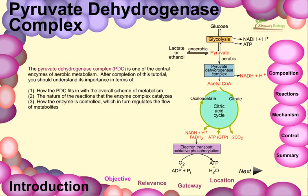Welcome friends. In this video tutorial we will be talking about the pyruvate dehydrogenase complex and its role in producing acetyl-CoA from pyruvate. The pyruvate dehydrogenase complex, or PDC, is one of the central enzymes of aerobic metabolism. After completion of the tutorial, you should understand the importance of how the PDC fits into the overall scheme of metabolism, the nature of the reactions and enzyme complexes that catalyze them, and how the enzyme is controlled to regulate the flow of metabolites.